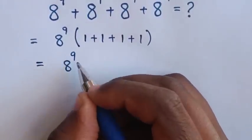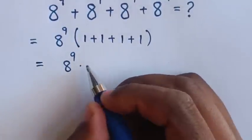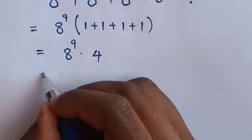8 power 9 times the sum of 1 plus 1 plus 1 plus 1, which is 4. So this will be equal to